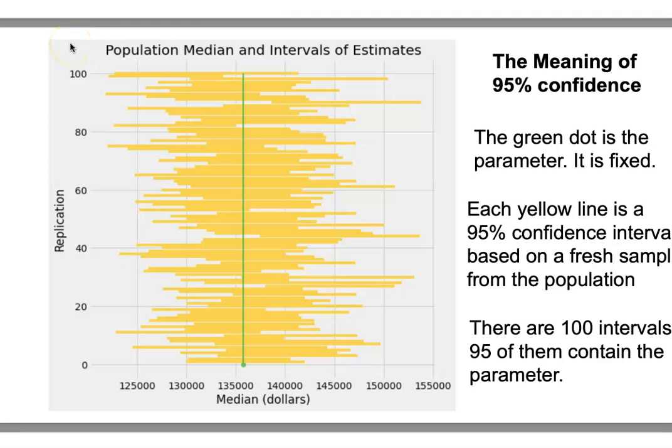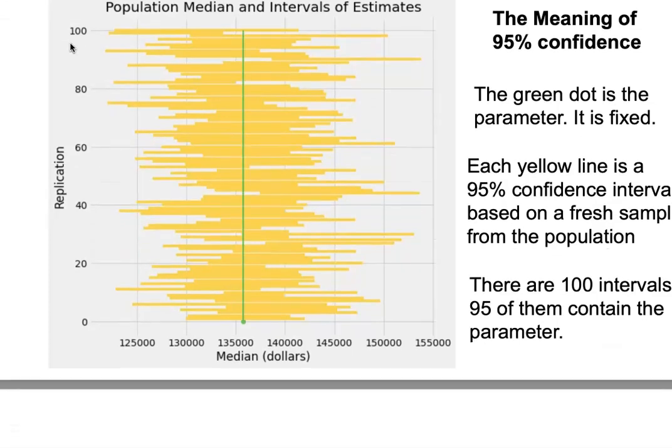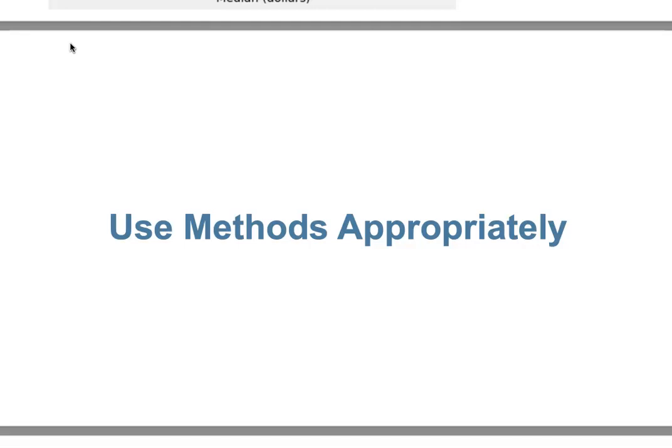So one original sample, apply the bootstrap process, and we get an interval estimate for the population parameter. However, the bootstrap technique cannot be used for every kind of parameter — we need to be careful and use our method appropriately.